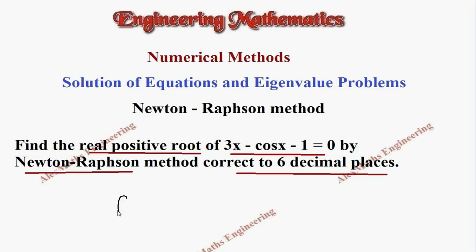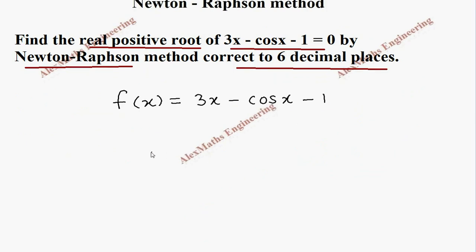As a first step, let's take f of x. f(x) = 3x minus cos x minus 1. Now let's find what is f(0). 3 into 0 is 0, cos 0 is 1, then we have minus 1, so totally it is minus 2.